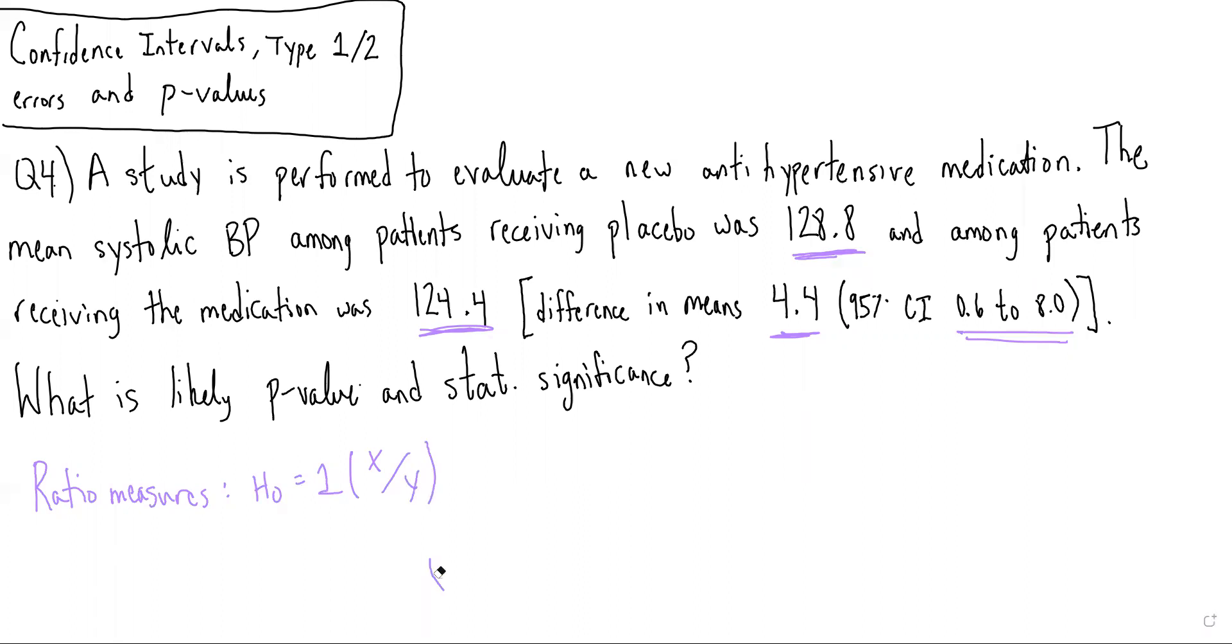However, for difference measures such as this, where it's actually x minus y, the null hypothesis is actually 0, because if x equals y and we're doing x minus y, then x minus y should be 0 if they're equal to one another.